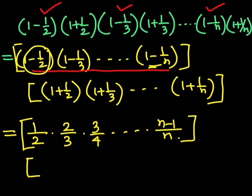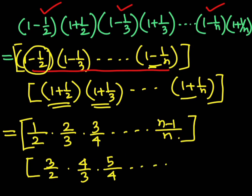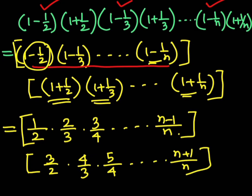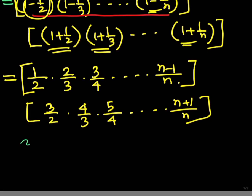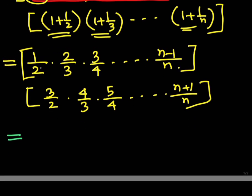The second product is: three by two, then four by three, then five by four, and so on, with the last term being n plus one by n. Now we observe that terms will cancel in both products.